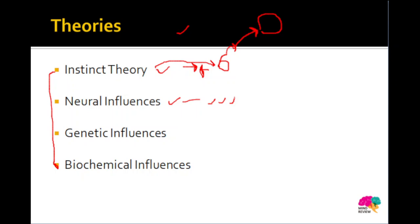Bonus points if you can tell whether amygdala and prefrontal cortex are in the telencephalon or diencephalon. Moving on, neural influences are clear — amygdala and prefrontal cortex are the key regions. Then there are genetic influences, which say that certain genes in our system — specifically serotonergic genes and their polymorphic genetic variants — are responsible for aggressive behavior. The more such gene variants an individual has, the more aggressive they will be.